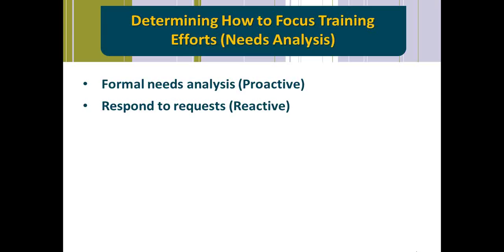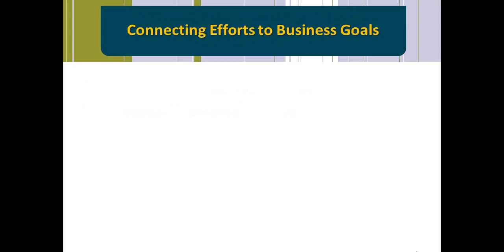It might not be connected to anything. It might not be connected to the business's goals. An example I would like to use is — and maybe this is true in your organization — whenever managers are asked what training their employees need, it seems like presentation skills comes up quite a bit. Yet when you dig deep, you learn that the organization has had presentation skills training. The reason it keeps coming up is it's one of the easiest skills to observe and critique. A manager can see an employee presenting and says they need work, whereas other skills that require training are much more difficult to identify.